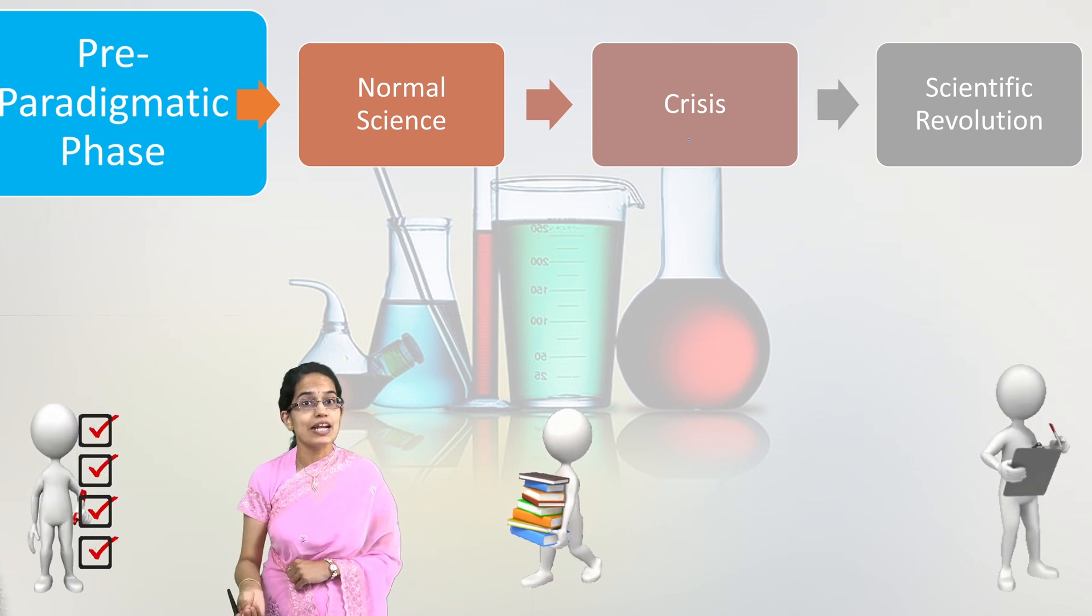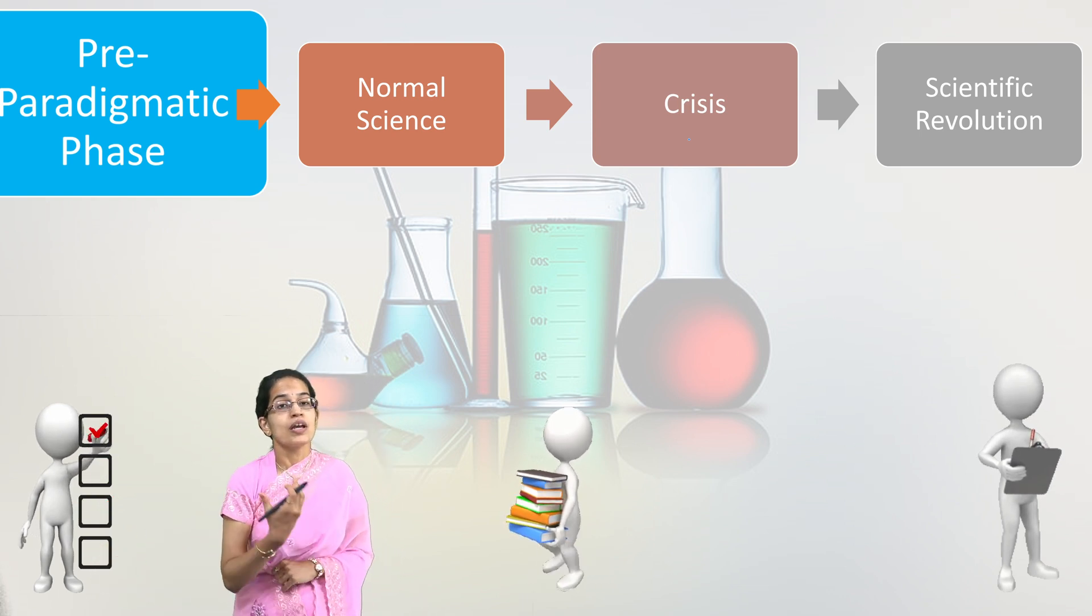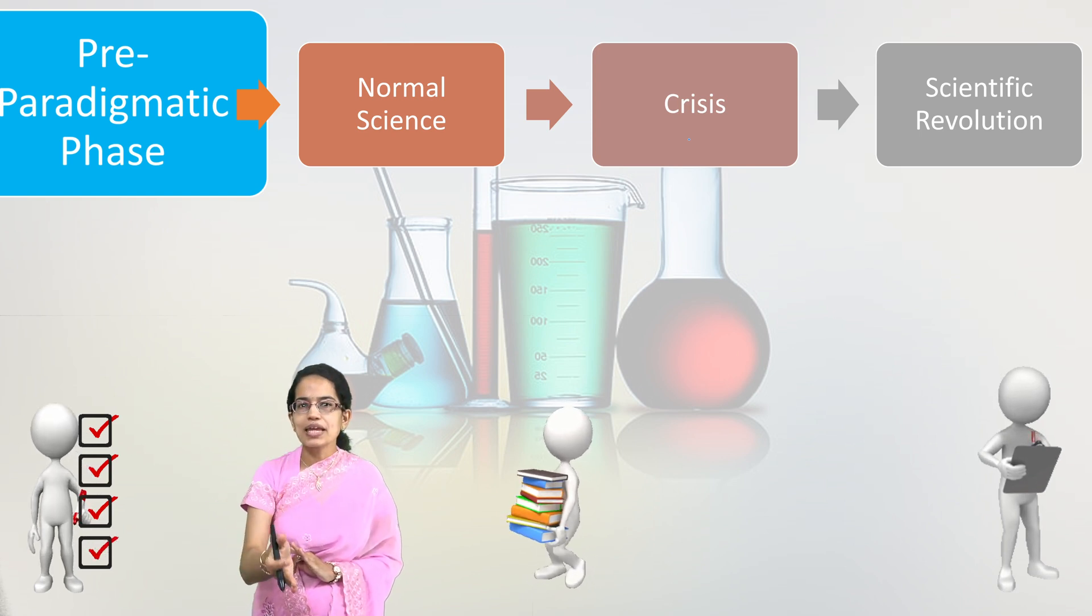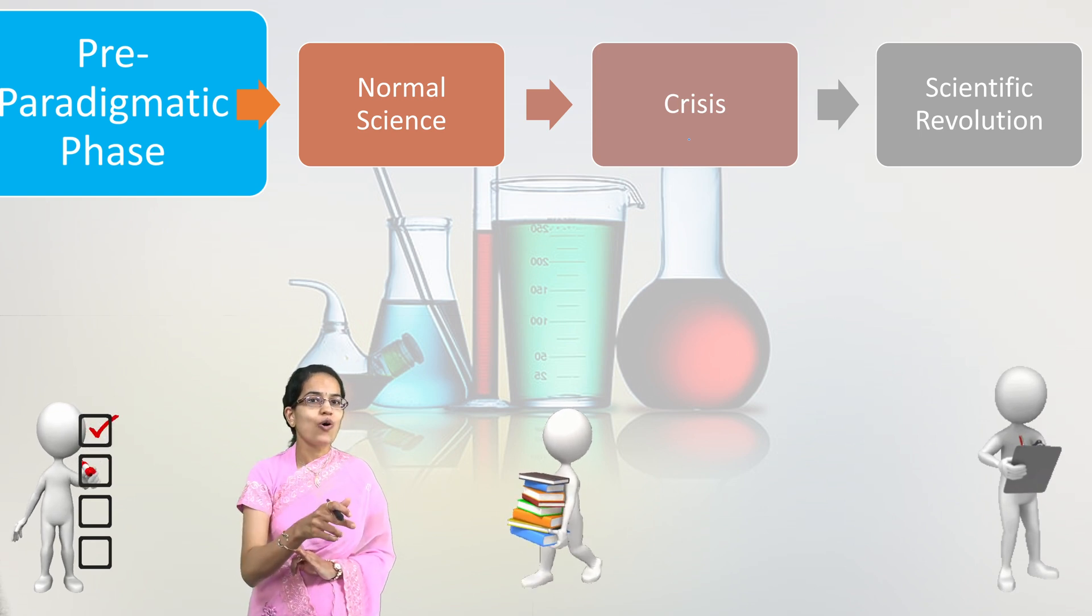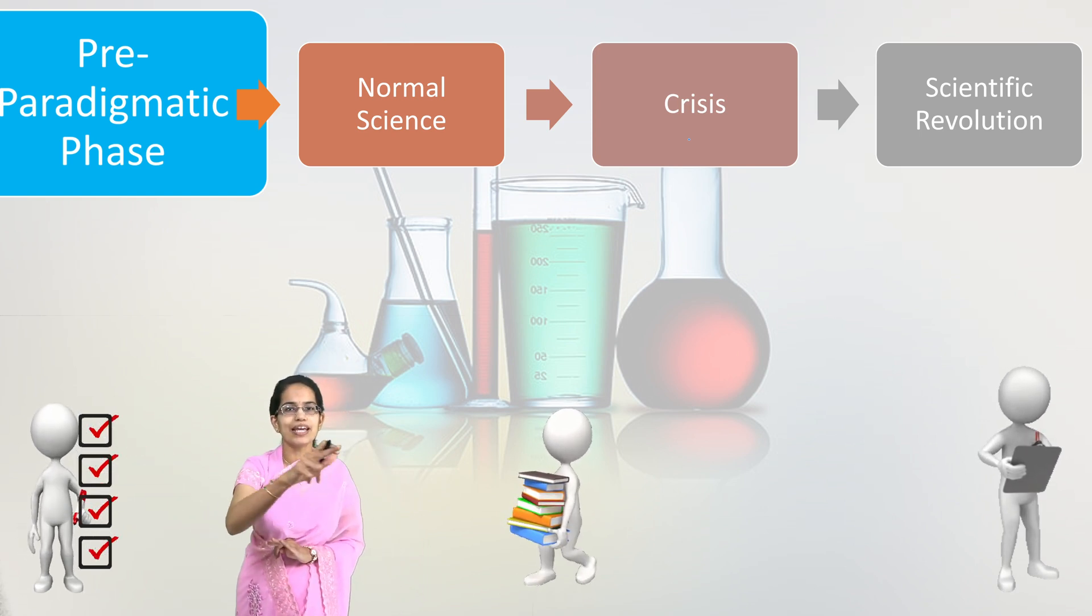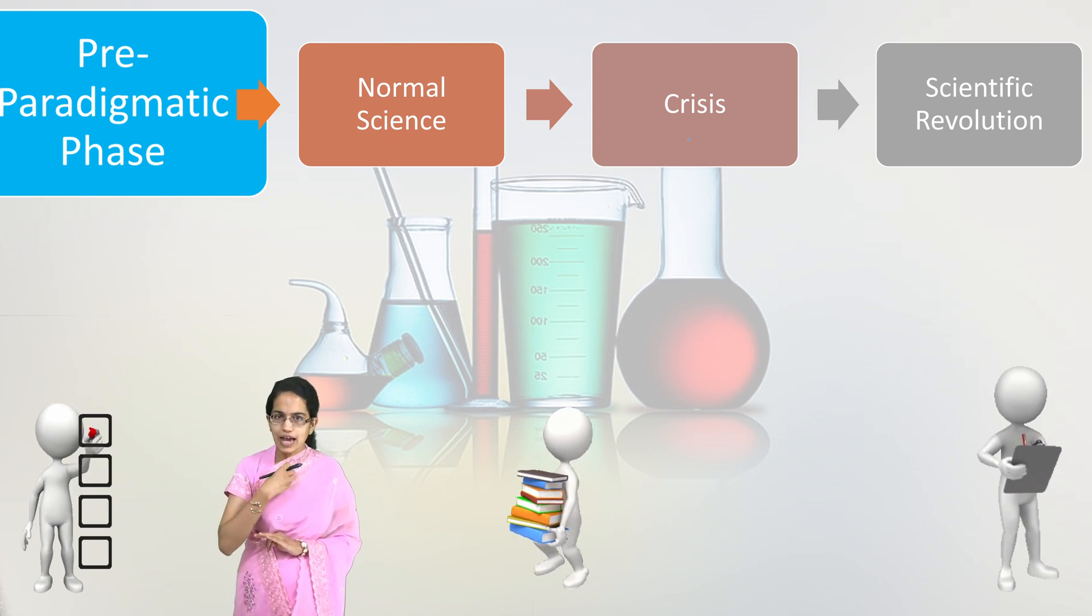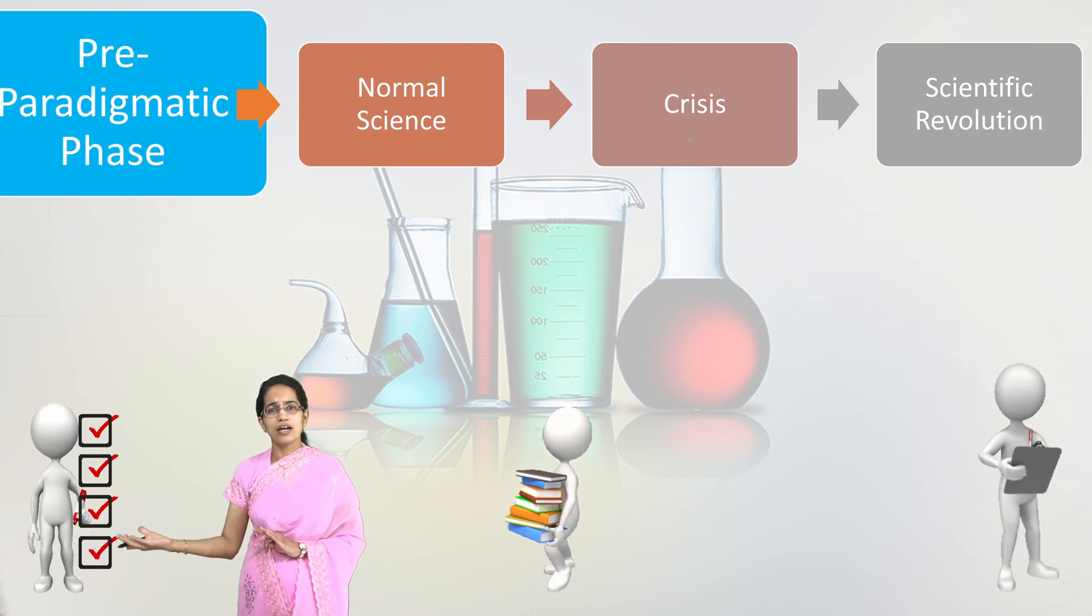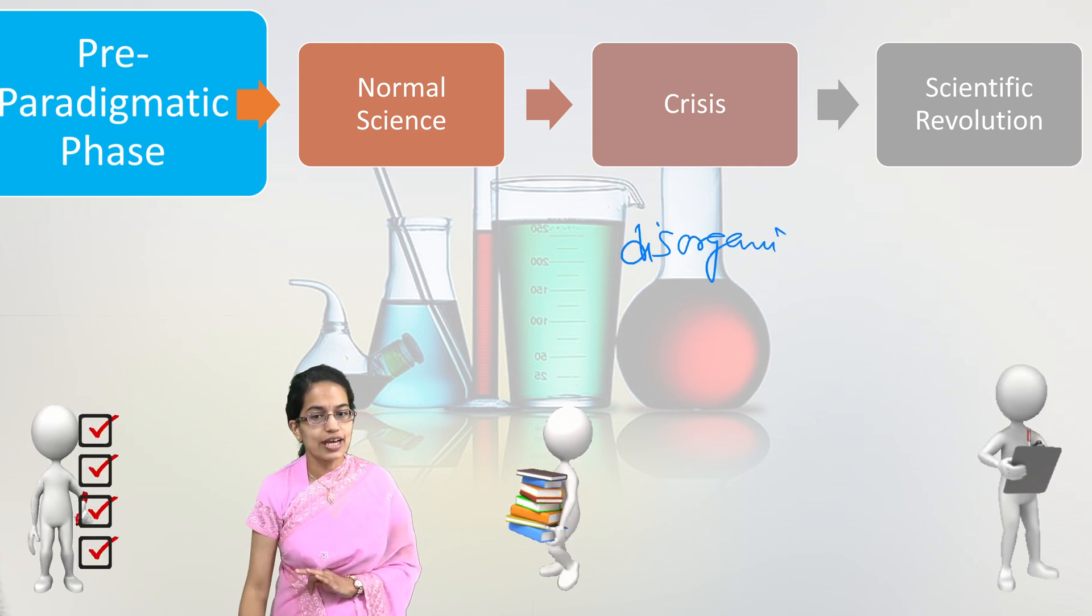As we said, paradigm is a universally accepted set of scientific achievement by the community of scientific scholars. Pre-paradigmatic was a phase that happened before that. So each of the scientists is working in their own laboratories independently. What I am working, what you are working, what your friend is working, we all are unaware about one another's work. Here the work is very disorganized.